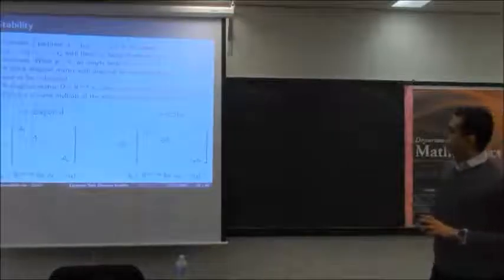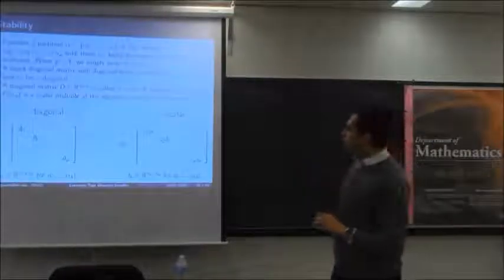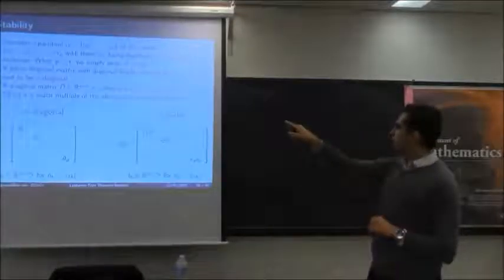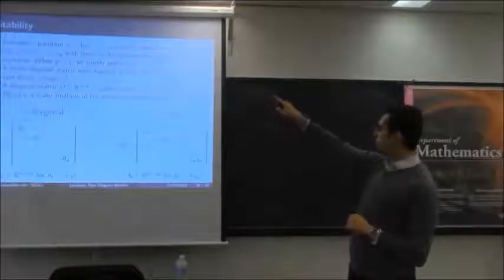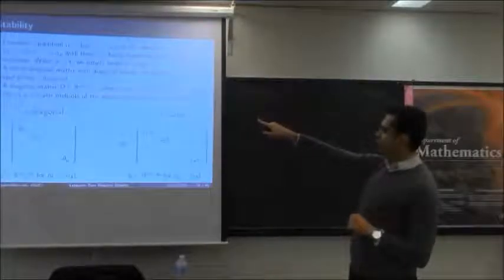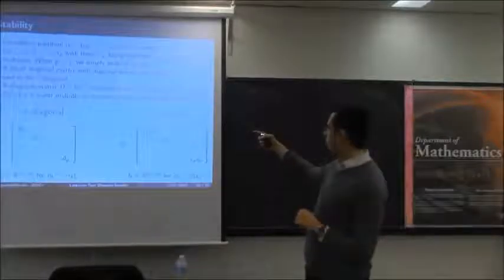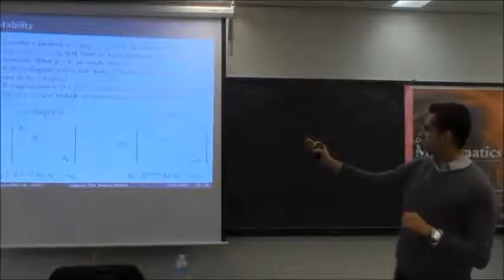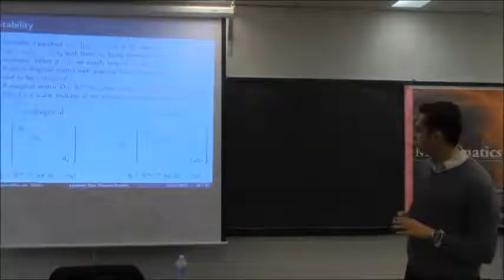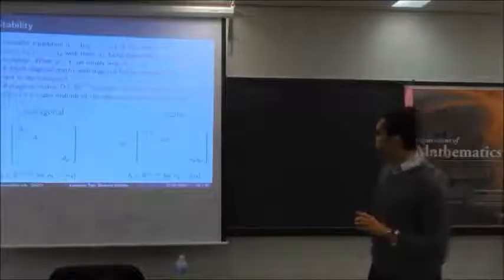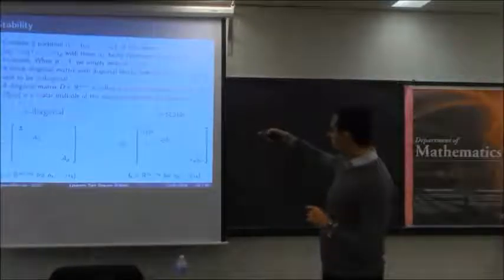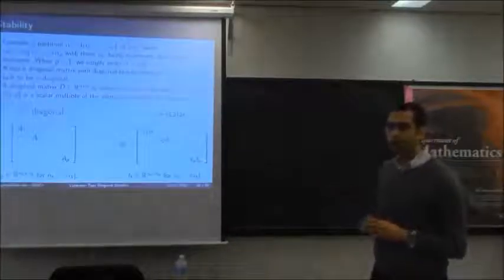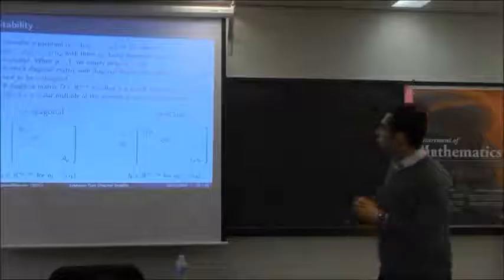The second notion is alpha-scalar matrices: this is a diagonal matrix where for each partition alpha_K, the block is a scalar multiple of the identity matrix of the same size. So D equals c_1 I_1, c_2 I_2, ..., c_P I_P, where I_1 through I_P are identity matrices with orders equal to the cardinality of the respective set alpha_K.